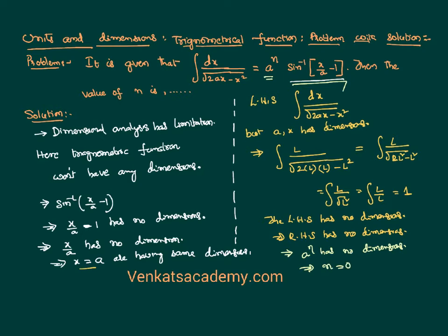Therefore, A power 0 becomes 1. So the value of N is simply equal to 0. This is how we can solve a problem by taking a basic concept like trigonometrical functions not having any dimension formulas. Taking a simple concept, we can solve the problem as shown here.